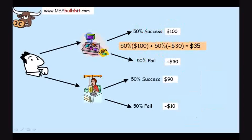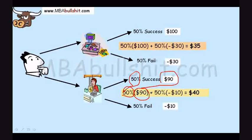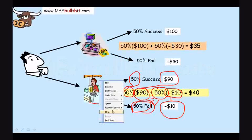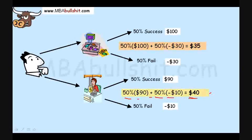Then we do the same thing for the lemonade stand: 50% chance of success times $90 that you would earn if it's a success, plus 50% chance of failure multiplied by the loss of $10 which you would have if your lemonade stand becomes a failure. We end up with: 50% times $90 plus 50% multiplied by negative $10, which equals $40.